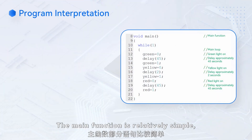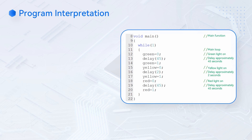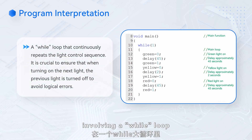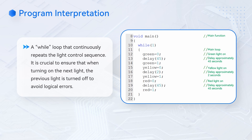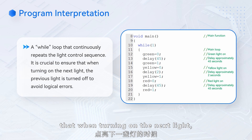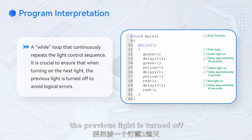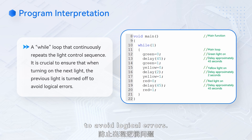The main function is relatively simple, involving a while loop that continuously repeats the light control sequence. It is crucial to ensure that when turning on the next light, the previous light is turned off to avoid logical errors.